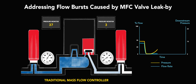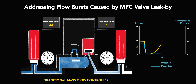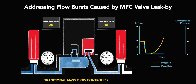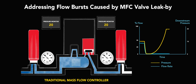With 40 PSIA between the upstream and downstream isolation valves, a gas leak-by occurs across the MFC valve, causing unwanted pressure buildup at the downstream pneumatic isolation valve. Over time, the pressure reaches equilibrium across the MFC valve and the downstream pneumatic isolation valve.